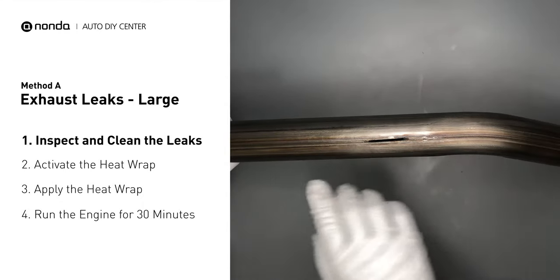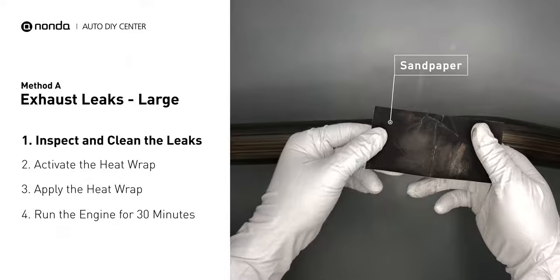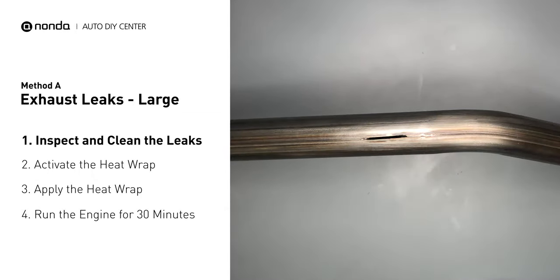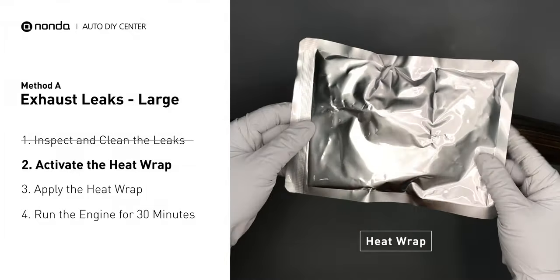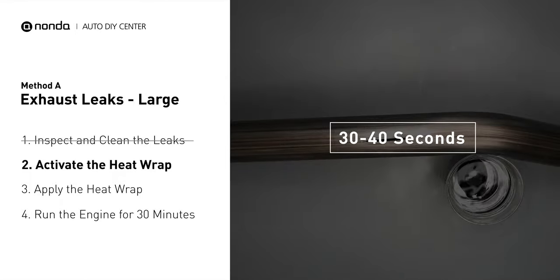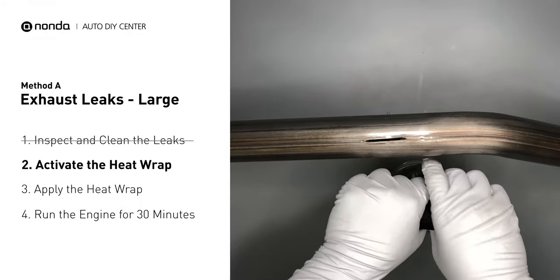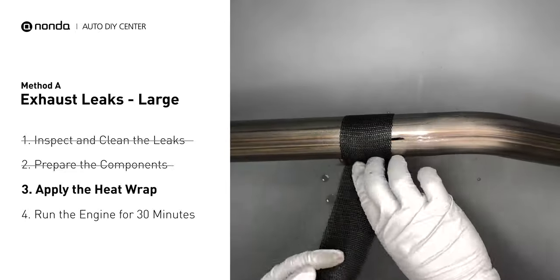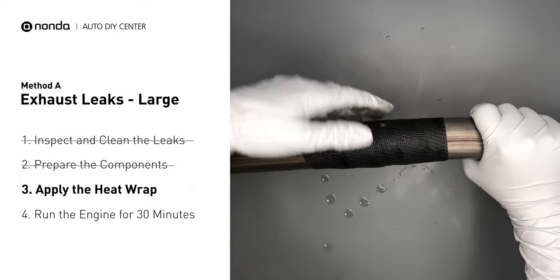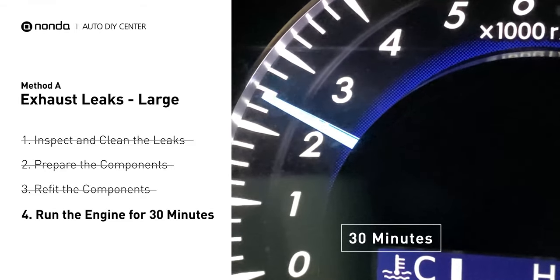Exhaust pipes are made out of rolled steel and have a welded seam. The seam will often rot into a large leak. First, get sandpaper and a wet wipe to clean the leaking area. Get the heat wrap out and put it in water for about 30 to 40 seconds to start the activation process. Then remove it and squeeze out any excess water. Wrap it around the area, overlapping a couple of inches on each side, and repeat the process 3 or 4 times. Squeeze it to make the resin go all through it. Start the car and let it run for 30 minutes so the heat cures it and makes a permanent fix.